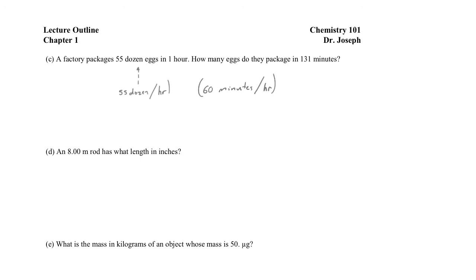So we have three conversion factors written down. The problem asks how many eggs do they package in 131 minutes, so 131 minutes is our starting point. Pause the video and see if you can put together the dimensional analysis, and when you unpause I'll show you my solution.